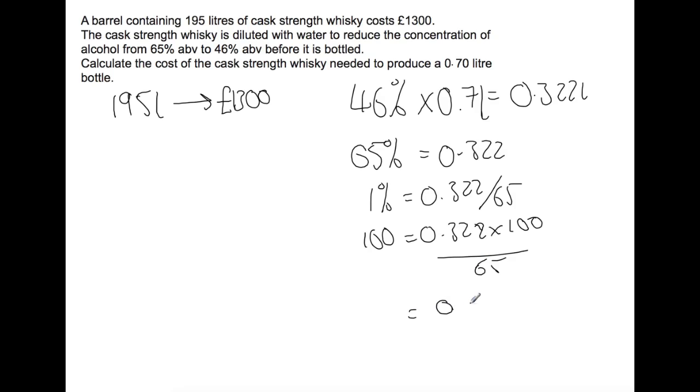You find that you would require 0.495 liters of the cask strength whiskey, which is 65% volume.